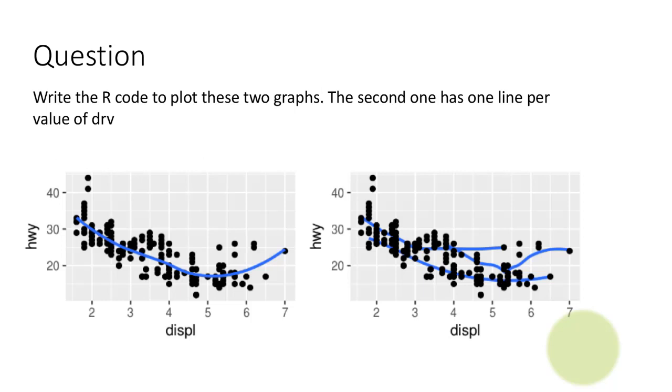Try this one. So we have got two charts shown here. I am saying write the R code to plot these two graphs. The second one has one line per value of drive. I am saying that because there is no legend to tell us what these lines are. Again, just maybe take a piece of paper, stop the video, and write out the code to the best of your ability. And then come back and follow the continuation of the discussion.